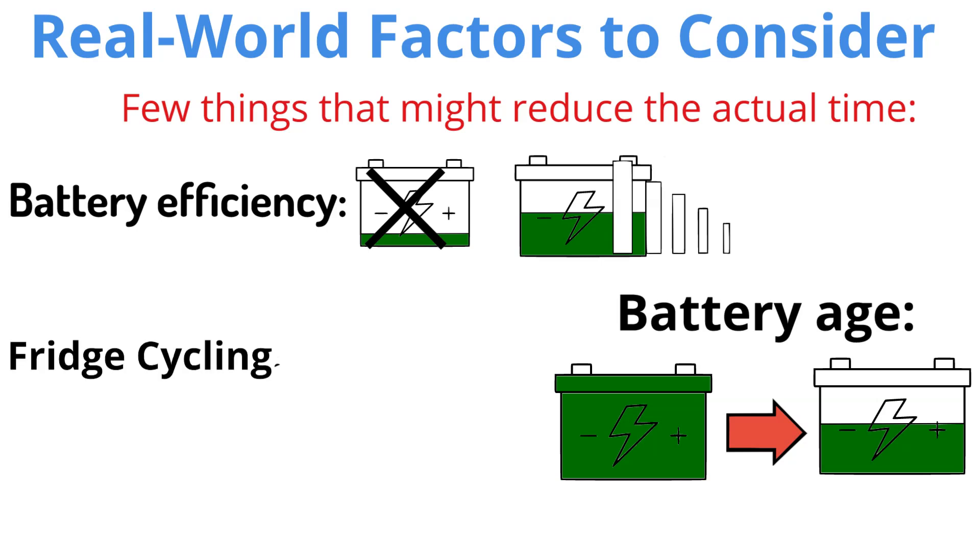Fridge Cycling: Fridges don't run constantly. They cycle on and off. So, the actual run time could be longer depending on how often the fridge's compressor kicks in.